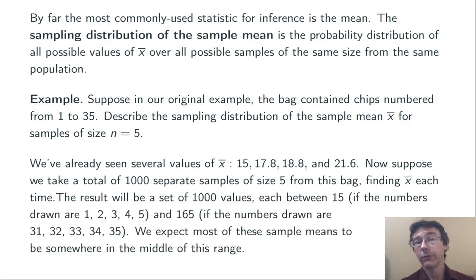We're going to get 1,000 different sample means, a list of 1,000 numbers. Each one is going to be between 15 and 165. 15 if we get the five smallest chips, 165 if we get the five largest chips. Now, obviously, those are pretty unusual occurrences, so we expect most of our sample means to be somewhere in the middle of the range.